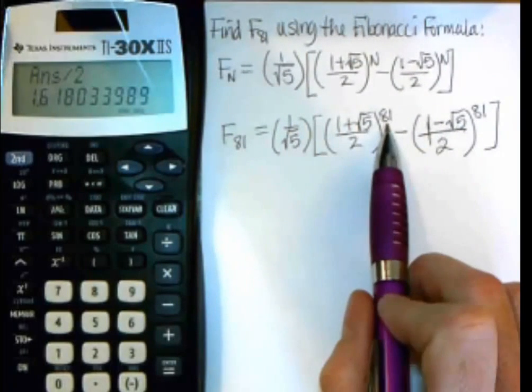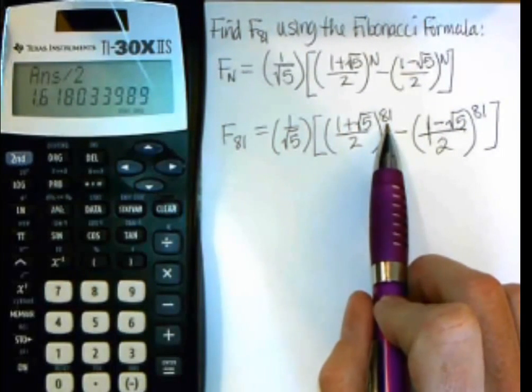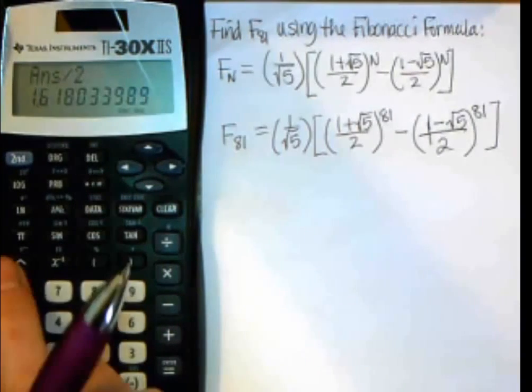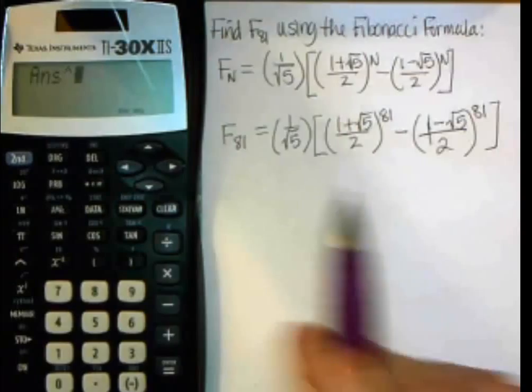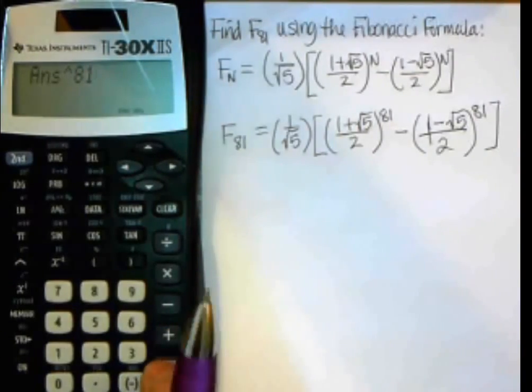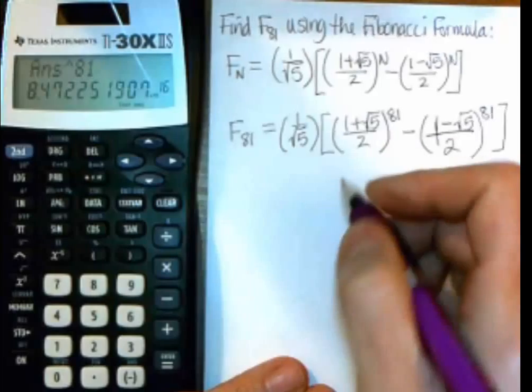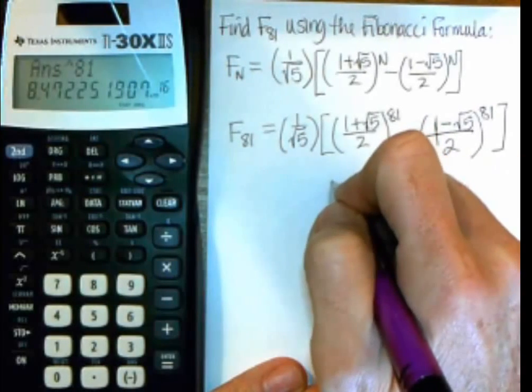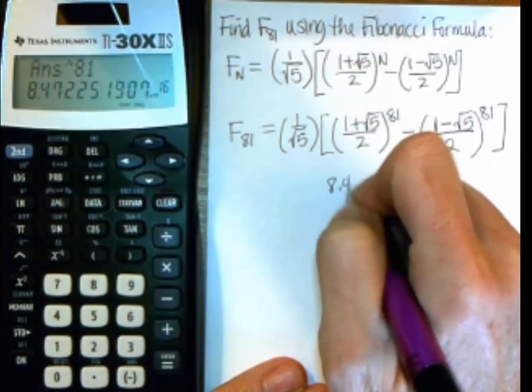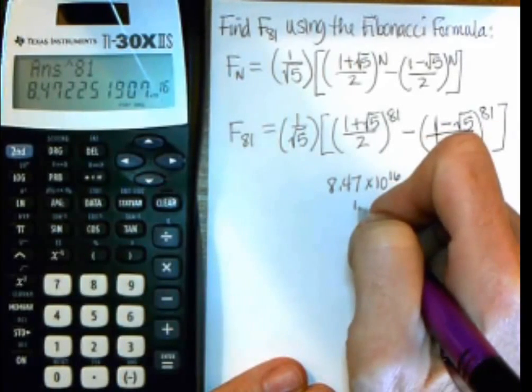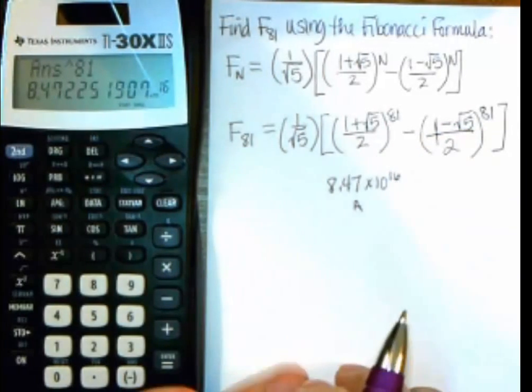And now I want to take it to the 81st power, not times 81, but to the 81st. So I have to use this to the button here, which is like a little caret, and then do 81, push enter or equals. And now I want to write this down just so I can kind of keep track of what I'm doing. But I have 8.47, and it's times 10 to the 16th. I'm going to store that in A on this calculator.